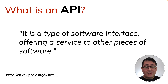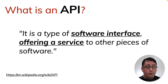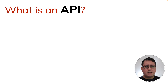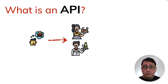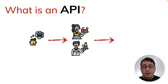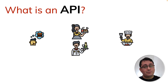So what is an API? An API is a type of software interface offering a service to other pieces of software. If we put this in context with real life, it's like when we are hungry and go to a restaurant — the first people we talk to are the servers, either a waitress or a waiter, who communicates our desire to eat something, in this case a burger, to the chef.